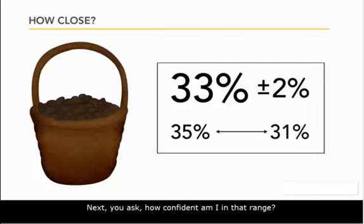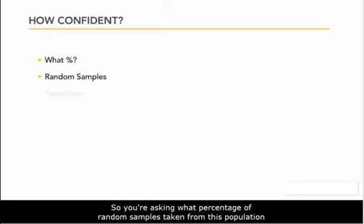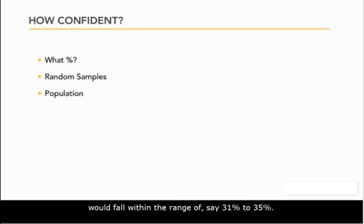Next you ask: how confident am I in that range? You're asking what percentage of random samples taken from this population would fall within the range of, say, 31% to 35%. The statement of how confident you are is what's called a confidence interval.